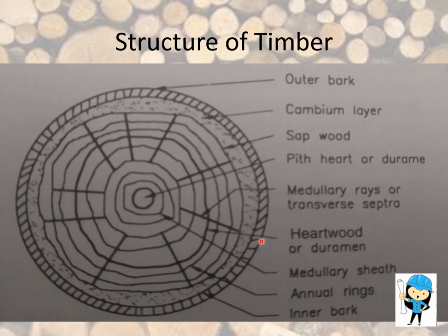Next we are going to see about the heartwood. This dark black color line is called the heartwood. Heartwood is darker in color and it is strong and durable. Heartwood is a dead portion of the tree and does not take part in the growth of the tree.